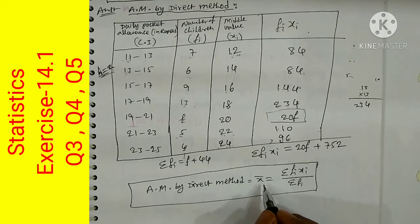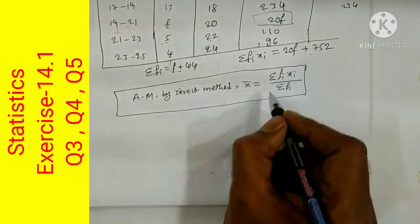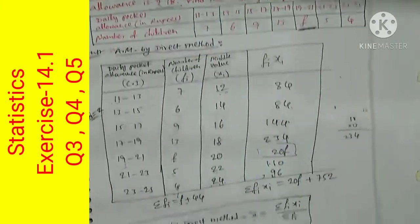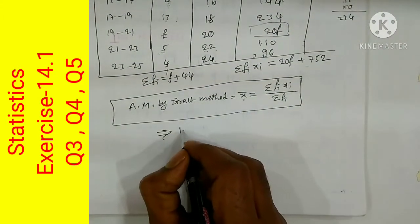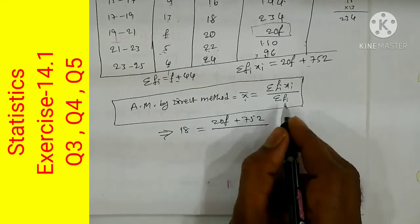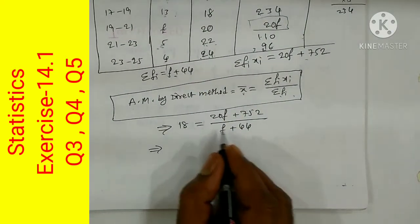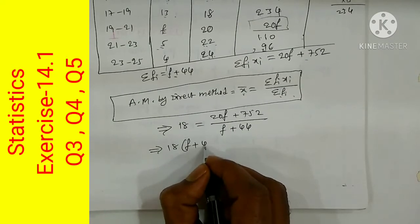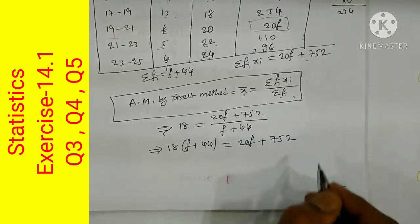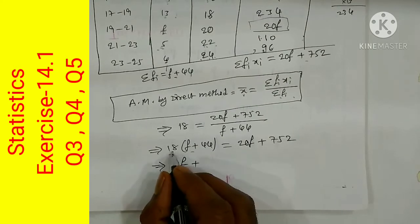By the direct method formula, X-bar equals Sigma Fi·Xi divided by Sigma Fi. Substituting the given mean of 18: 18 = (20F + 752) / (F + 44). Cross-multiplying gives 18(F + 44) = 20F + 752, which expands to 18F + 792 = 20F + 752.